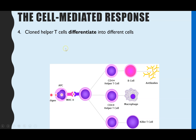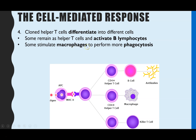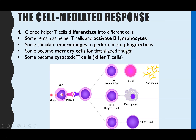Those T helper cells will then differentiate into different cells or stimulate different cells. Some will remain helper T cells and go on to activate B cells, which are part of the humoral response covered in a later video. Some will stimulate macrophages — the phagocytes — which will then undergo phagocytosis and destroy any pathogens. Some will become memory cells, storing memory of that particular shaped antigen. And some will become cytotoxic T cells, or killer T cells.